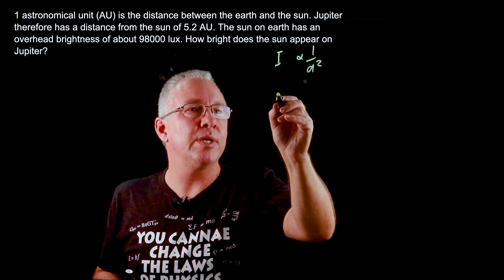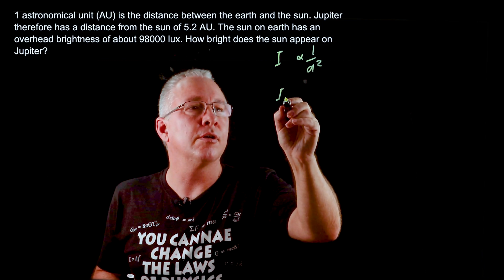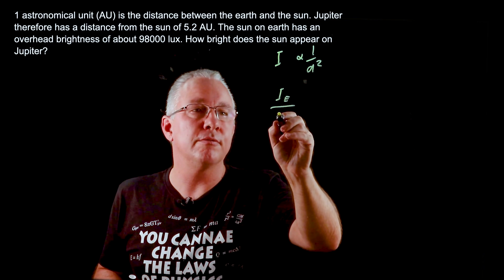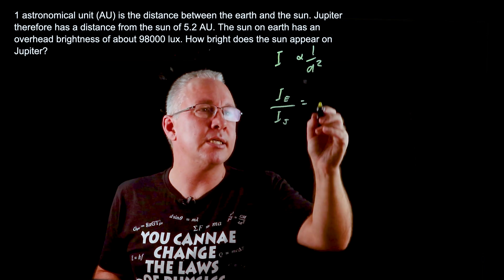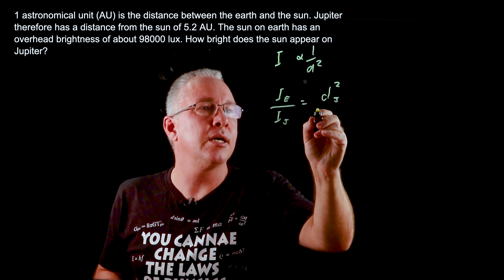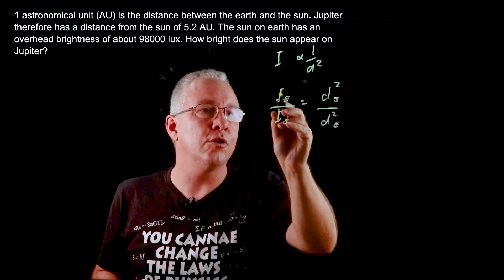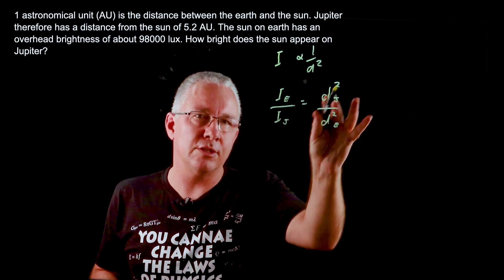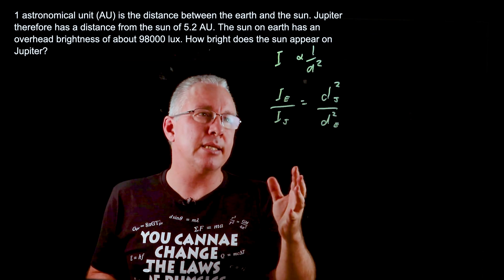What that means is that if we compare the intensities of the Earth to that of Jupiter, then the ratio there is equal to the distance squared of Jupiter over the distance squared of the Earth. Can you see how these are sort of diagonally opposite each other and that sort of makes sense.